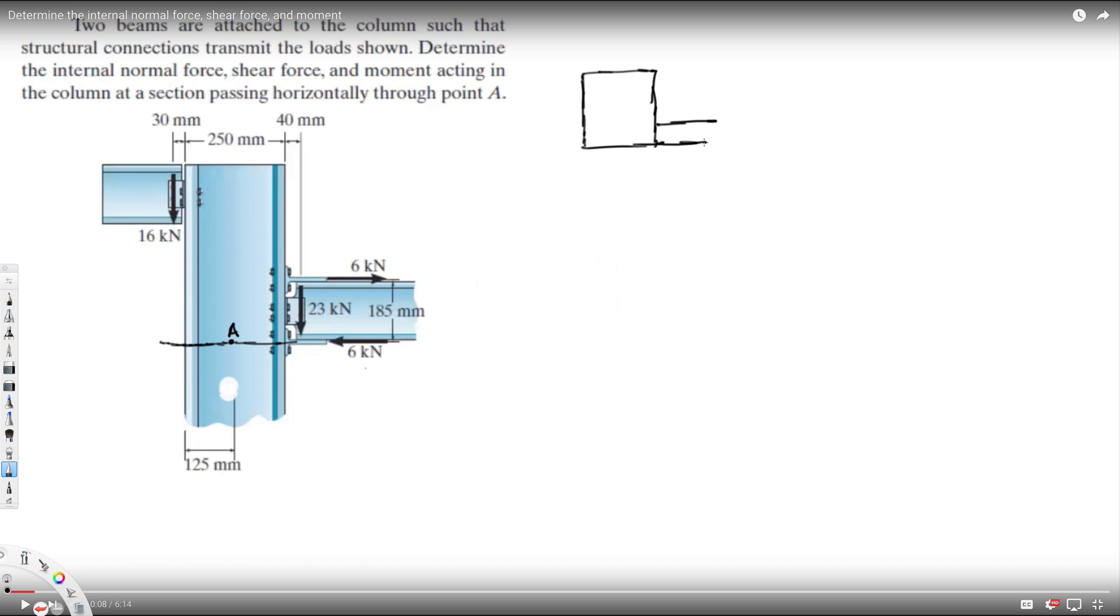We start attached to this, and we have 23 kilonewtons acting downside. That's going to be a normal force. Let's assume this direction is upside, and we have a 6 kilonewton acting this side and another 6 kilonewton acting in this direction.